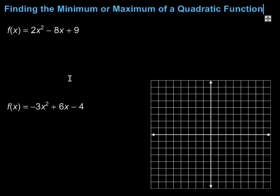In this video we're going to take a look at finding the minimum or maximum of a quadratic function, as well as stating the domain and range. When we talk about minimums and maximums in quadratic functions, remember that a quadratic function is in the shape of a parabola. If it opens upward, we're going to have a minimum right here because this is as low as it's going to go — all the other values are going up.